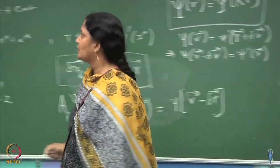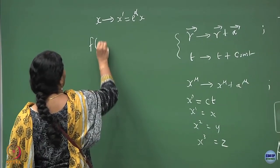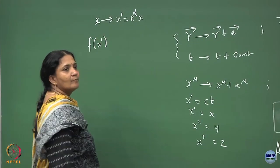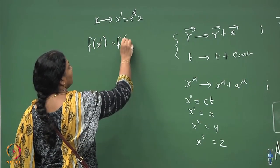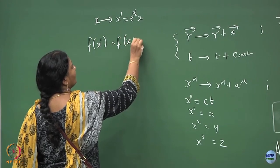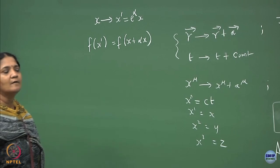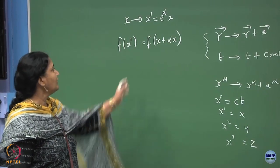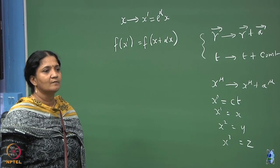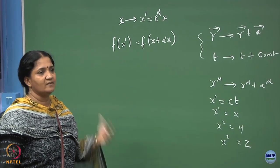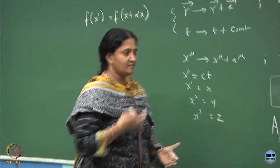If I write f of x prime, taking the infinitesimal limit it will become x plus alpha times x. Do a Taylor series expansion for this and see what is the generator. You say that this generator does the scale transformation.